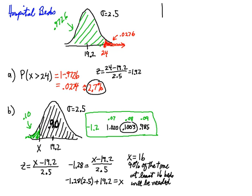Again, this requires careful understanding of what the problem is asking. '90% of the time, at least how many beds will be needed?' means: how many beds or more will be needed 90% of the time? So the 90% is in the upper end of the distribution, and the X we're looking for is on the lower end.